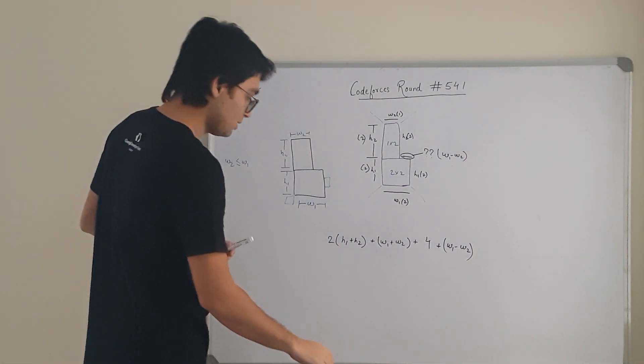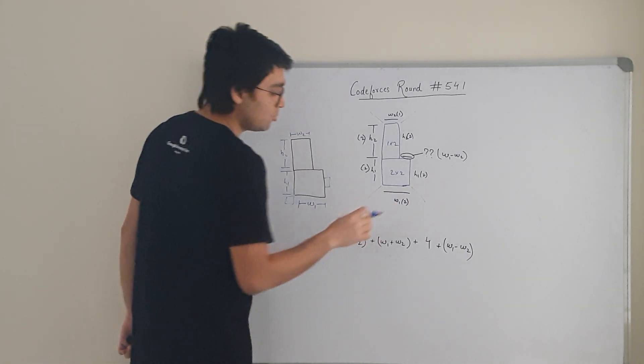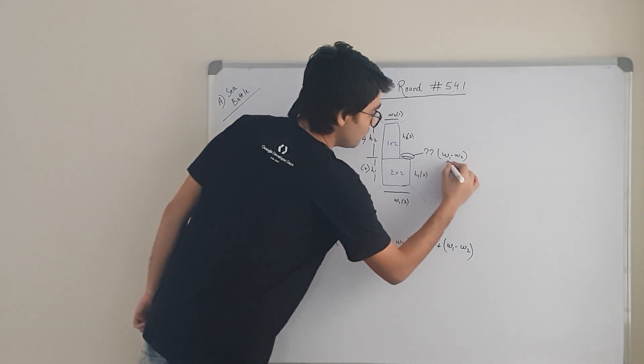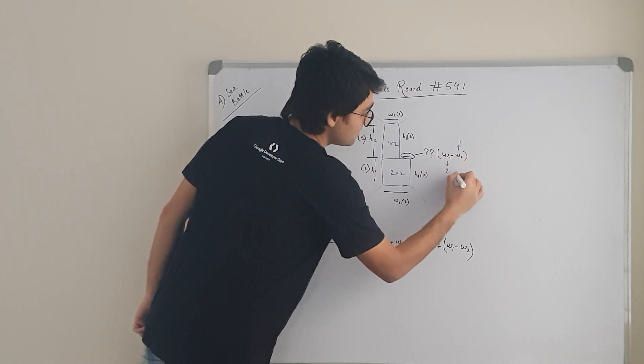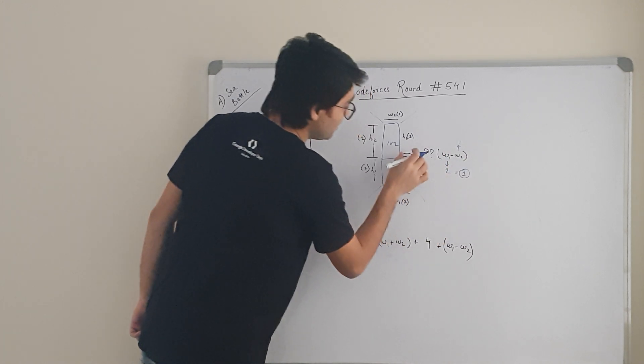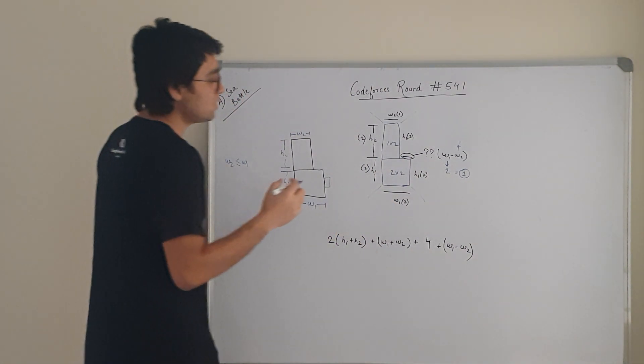If we look into this, what it is going to be for this case? What we were having W1 as? We were having W1 as 2 and W2 as 1. So 2 minus 1 is 1. Here we are getting 1 cell which is going to be extra.